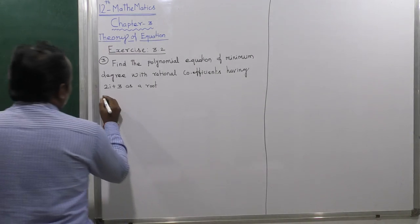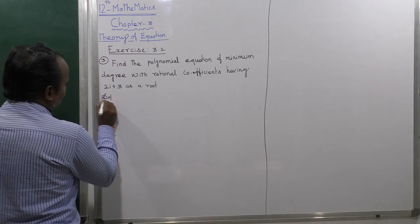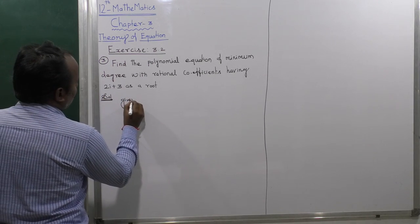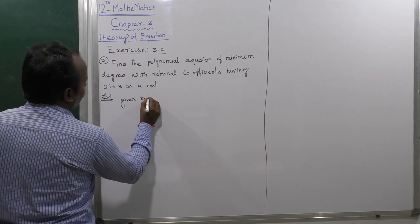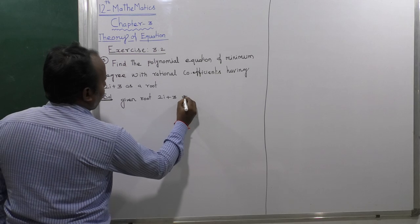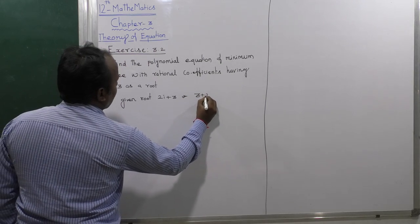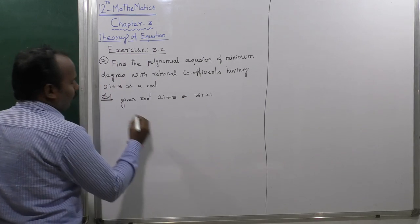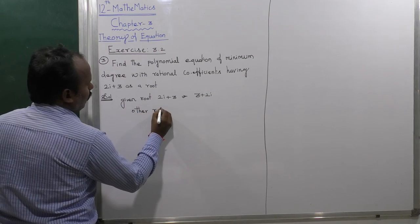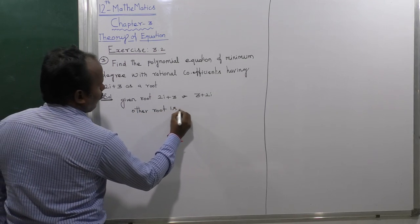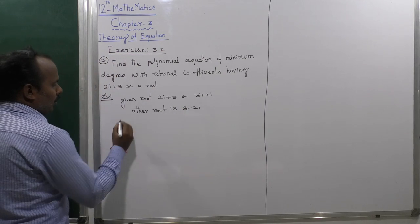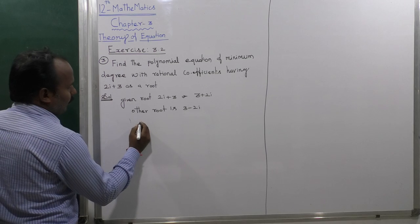Given root: 2i plus 3, which is 3 plus 2i. Therefore the other root is 3 minus 2i. Now we find the sum of the roots.